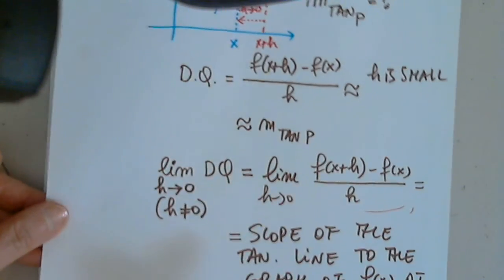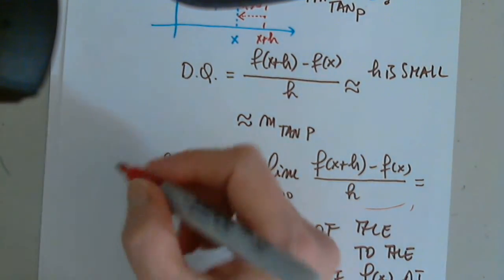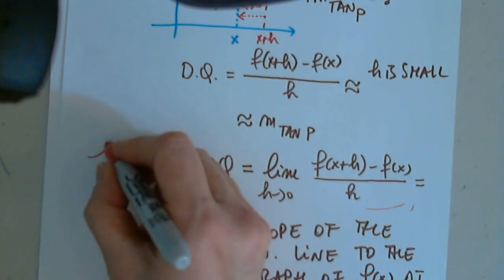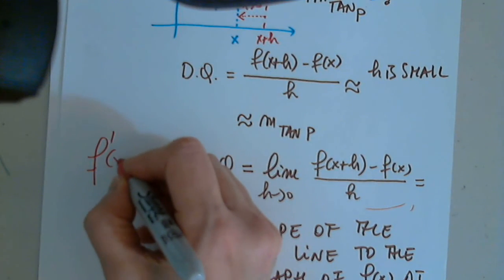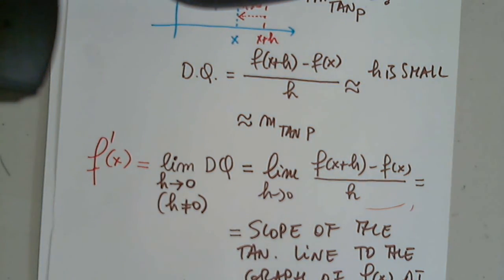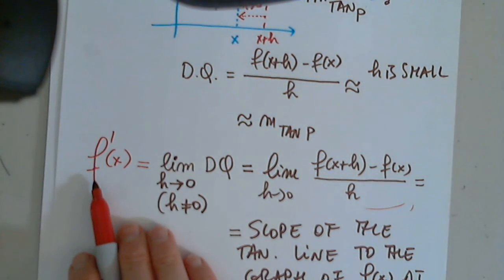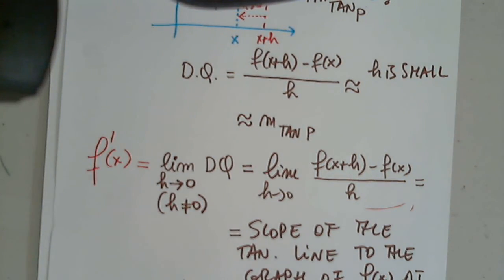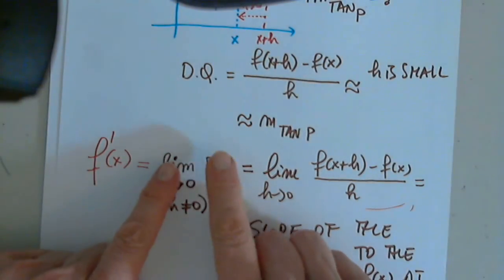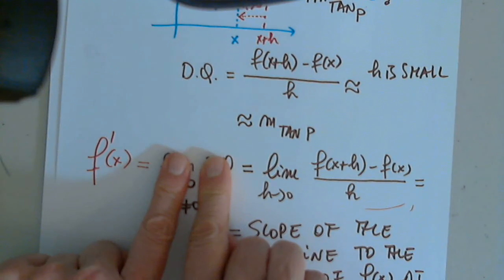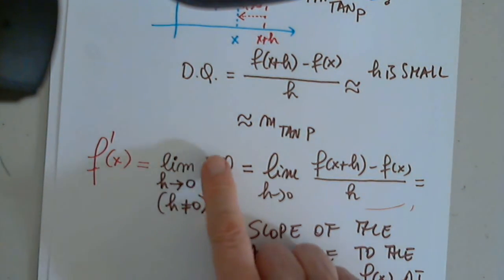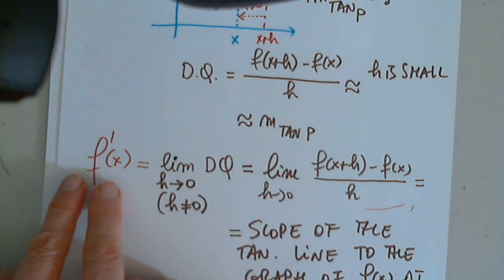So the notation is f prime of x. f prime of x is nothing else but putting together the difference quotient with the limit operator when h approaches 0. The difference quotient with the limit operator is this function.